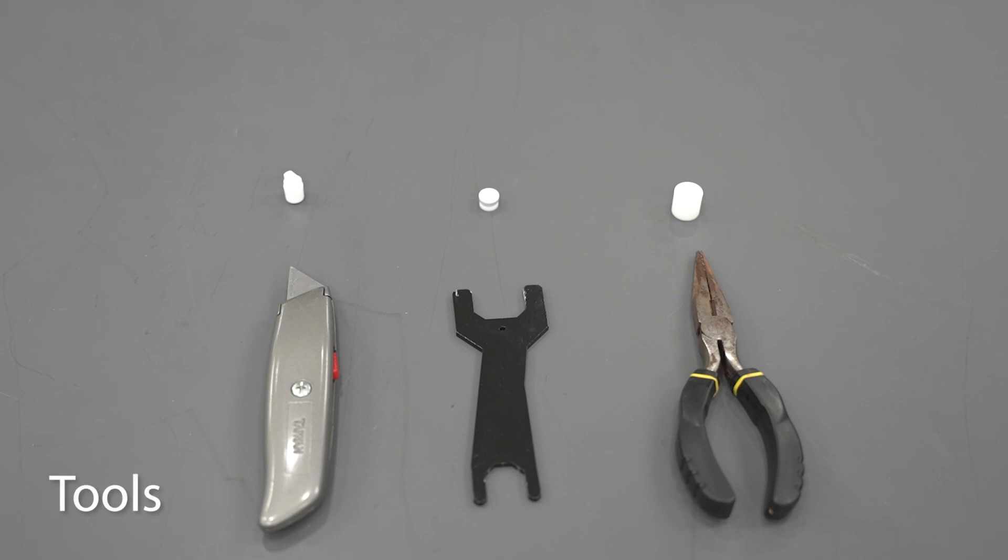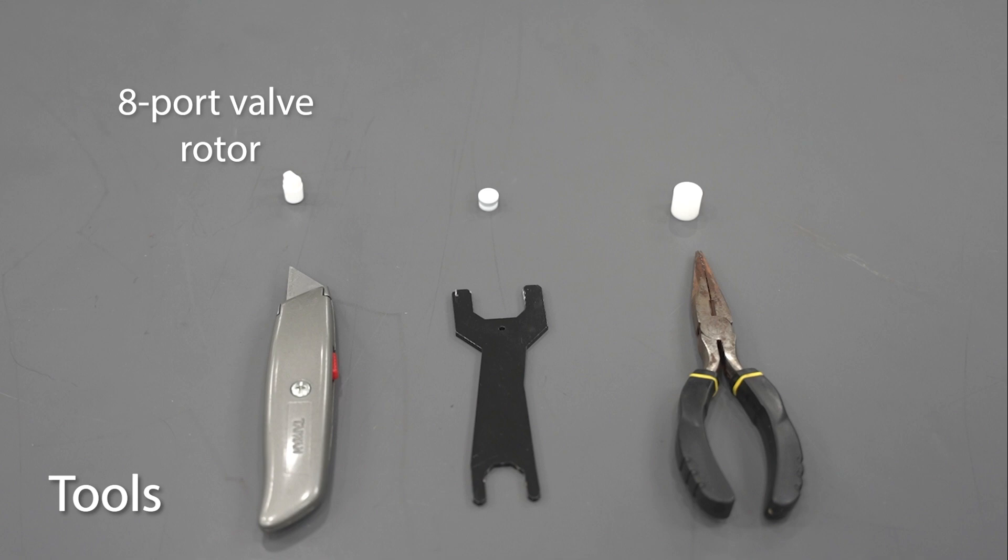To perform this maintenance, you will need the black double-sided wrench that came with the TOC as well as a pair of needle-nose pliers and a razor knife. You will also need a new valve rotor, a new syringe plunger tip, and the white jig that came in the box with the syringe.